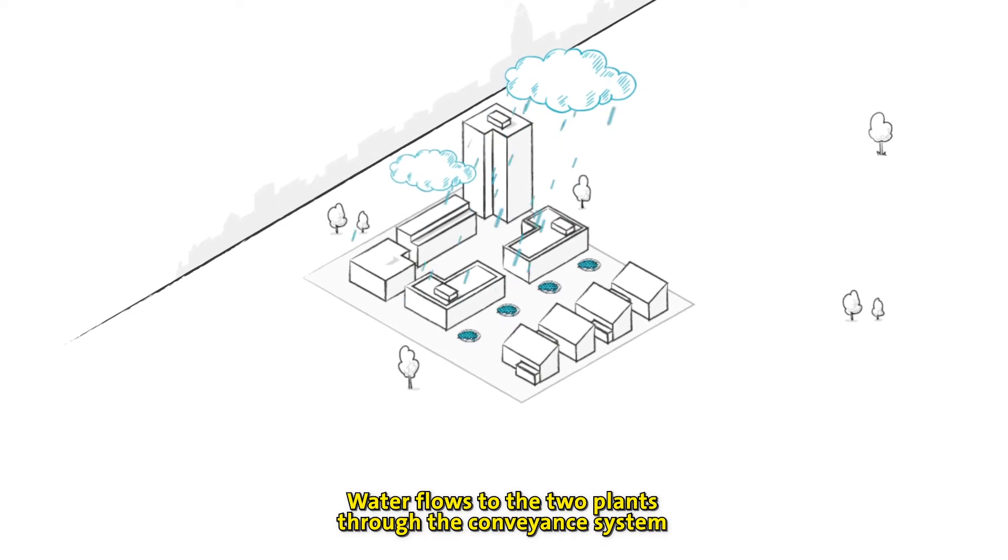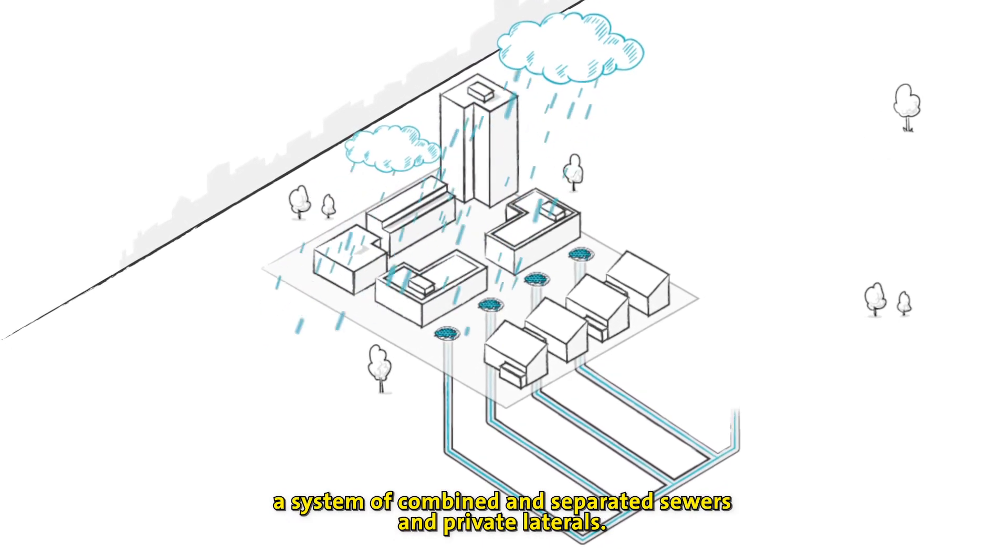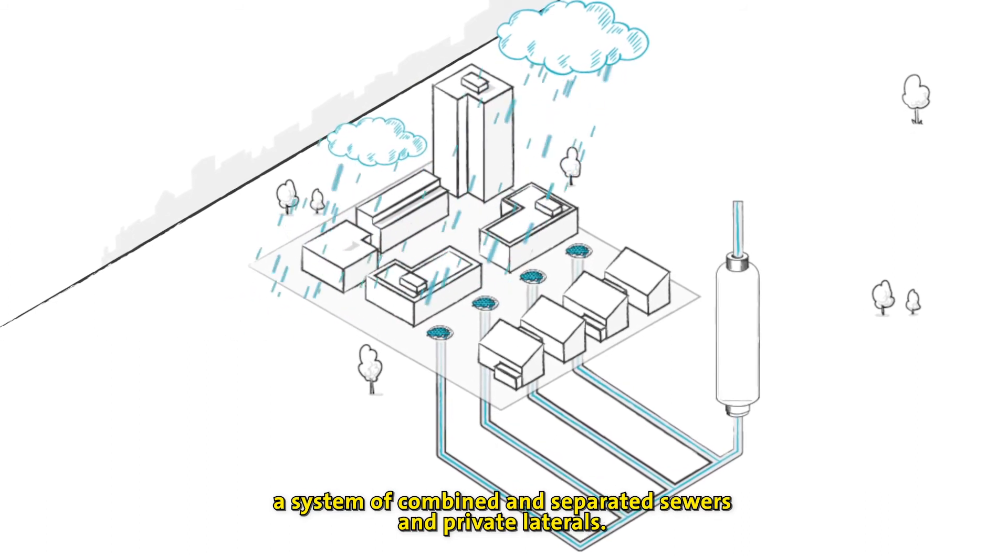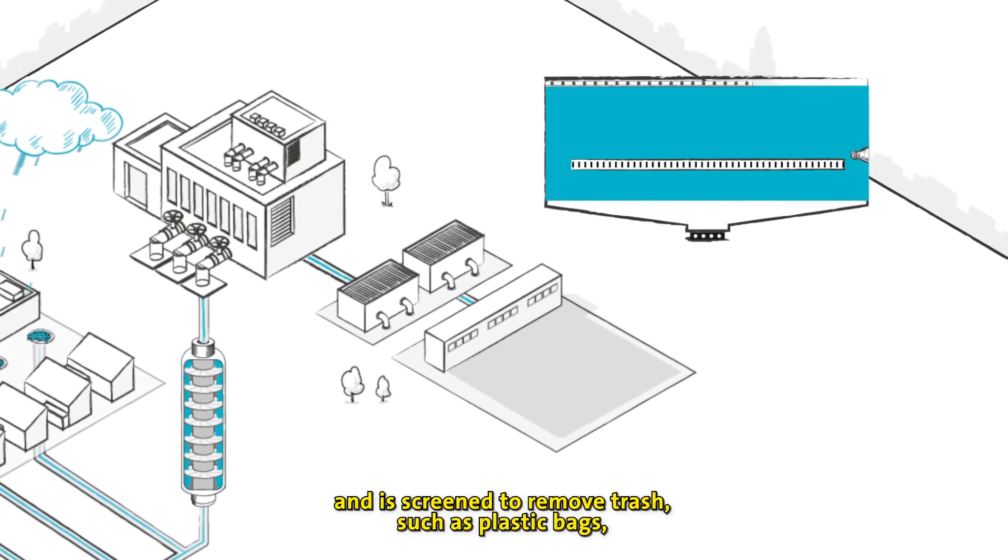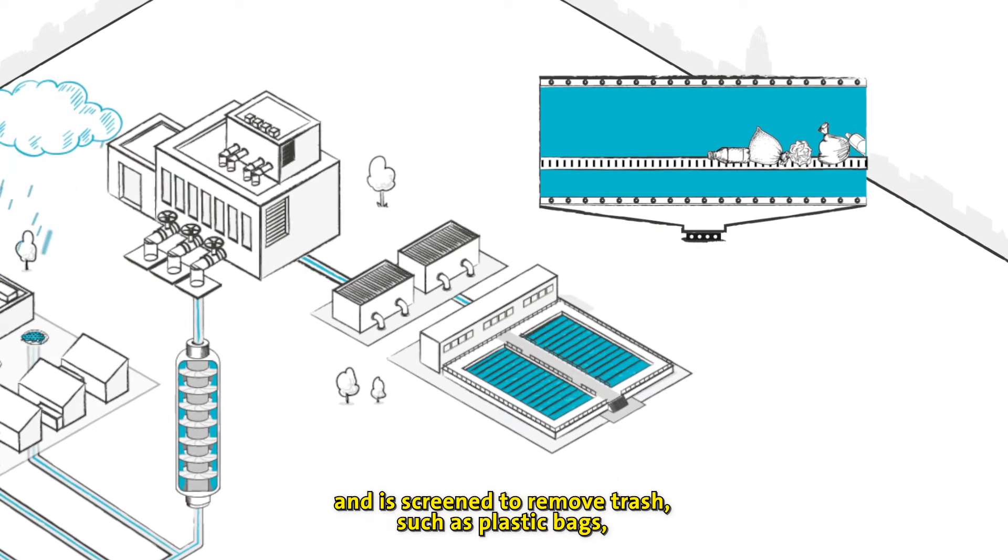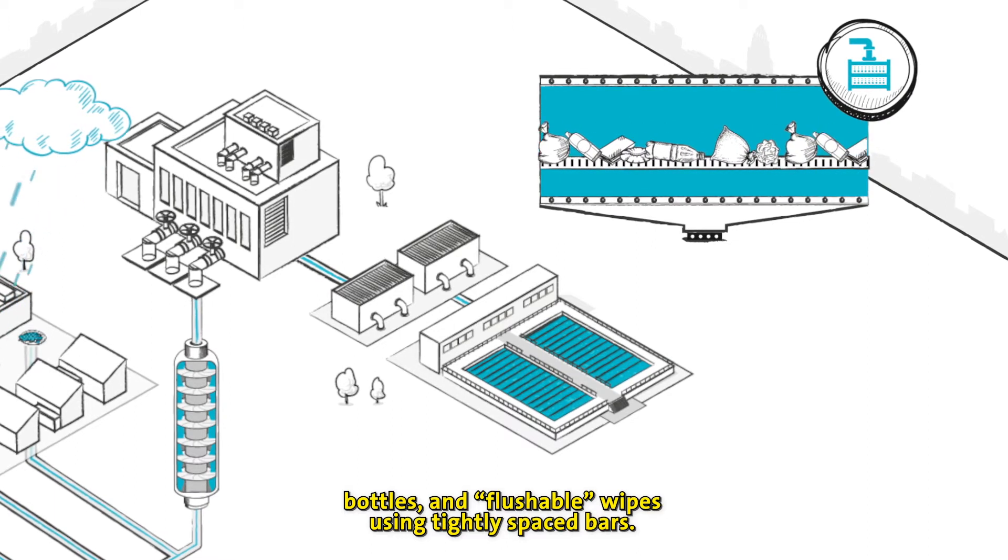Water flows to the two plants through the conveyance system, a system of combined and separated sewers and private laterals. Water is brought up from underground using Archimedes screws and is screened to remove trash, such as plastic bags, bottles and flushable wipes, using tightly spaced bars.